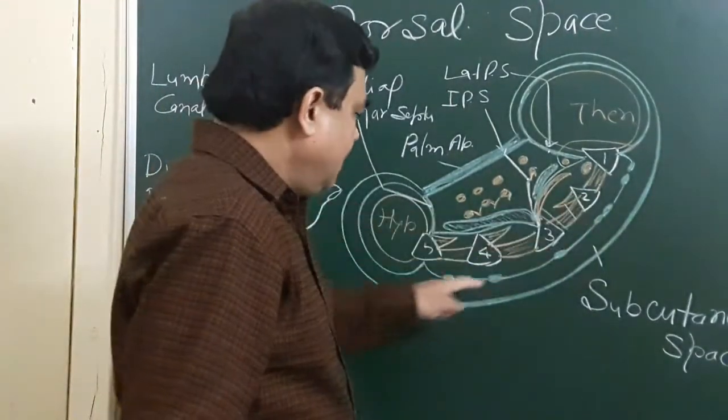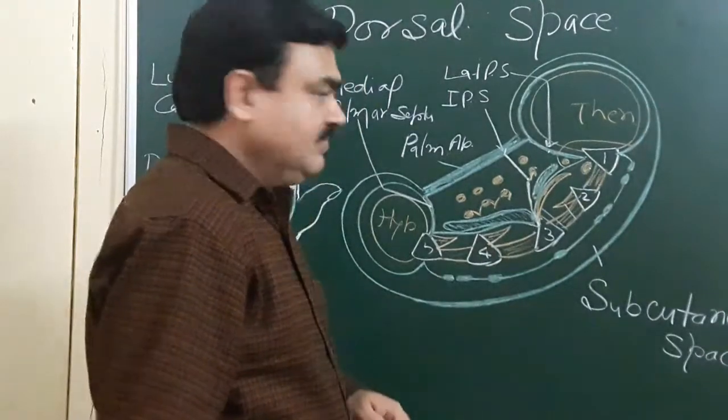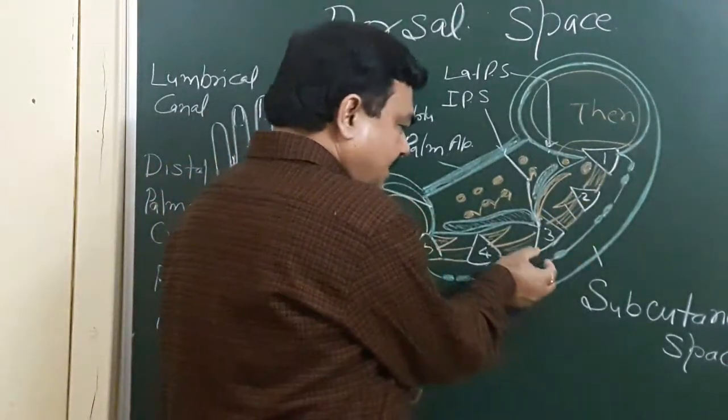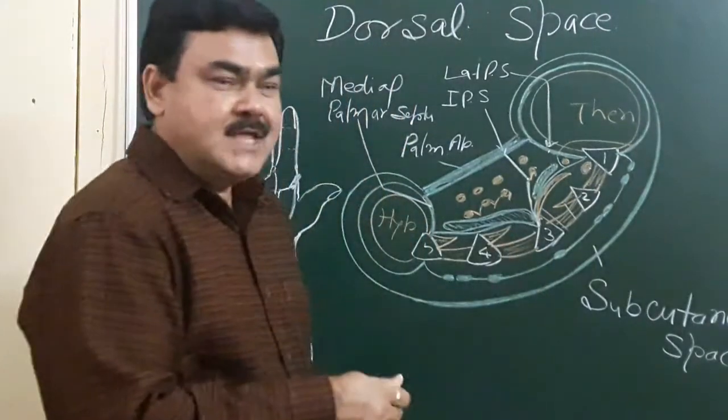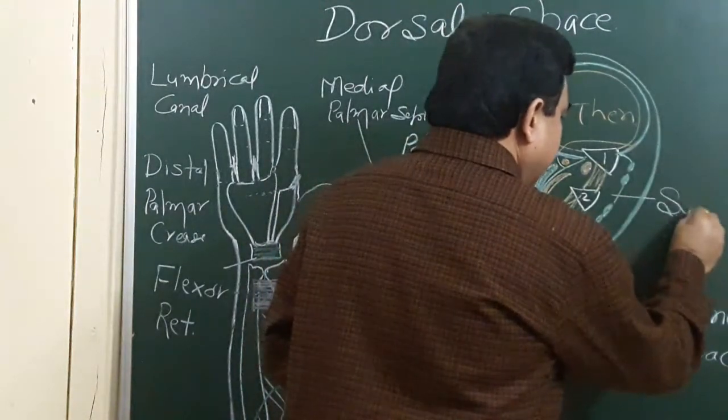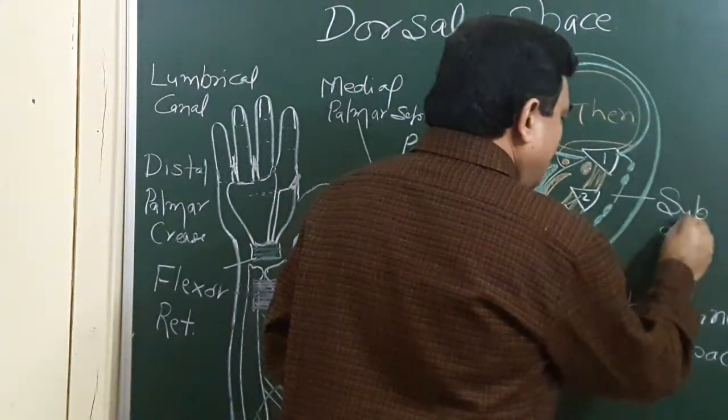From an aponeurotic sheet, just below this, there is another space that is known as the subaponeurotic space.